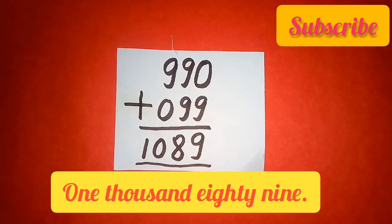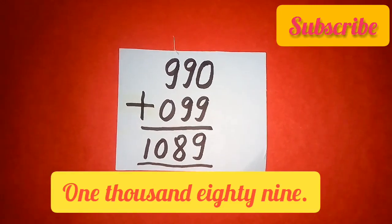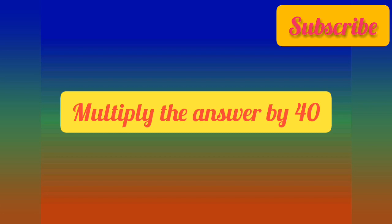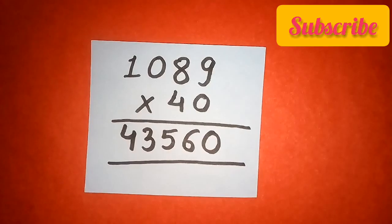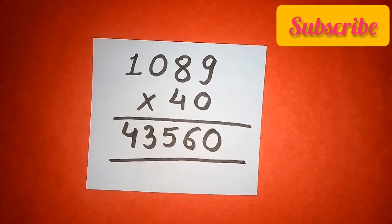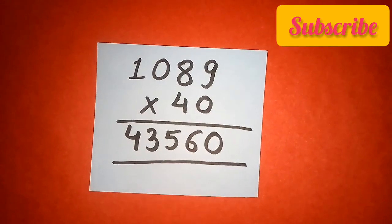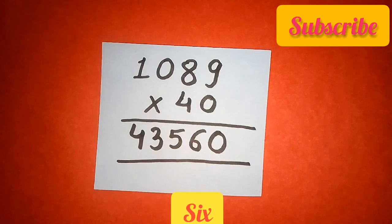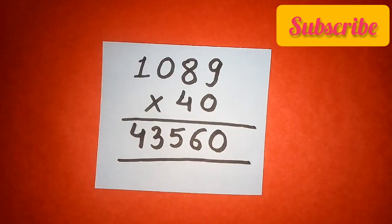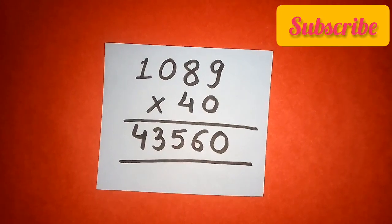Now, next step is, multiply the answer by 40. My answer is 1089. What I have to do? I have to multiply it by 40. So let us see what will happen. 1 0 8 9 into 40 is equals to 4 3 5 6 0. I got 43,560.